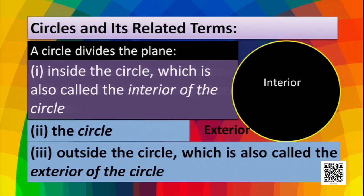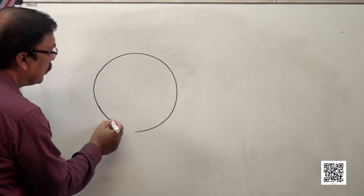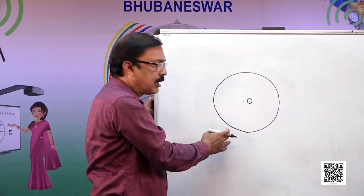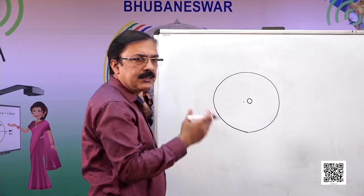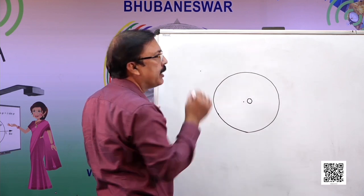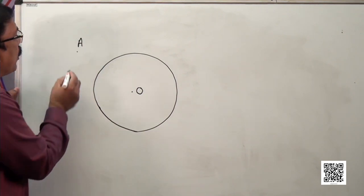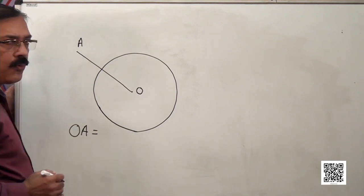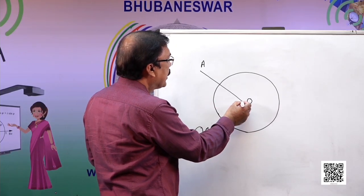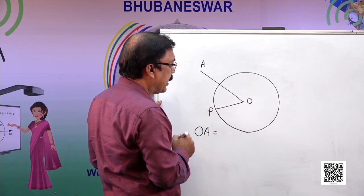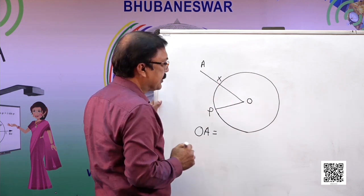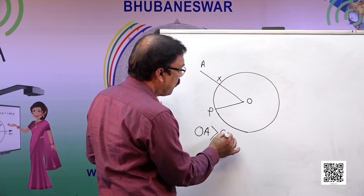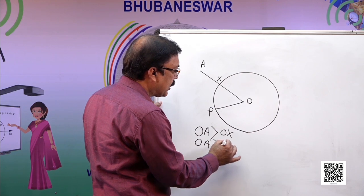Let's draw a circle. If this is a circle and O is the center, inside it is the interior and outside is the exterior. If we put a point A outside and join line OA, the length OA is greater than the radius. If OP is the radius, it intersects the circle at X, so OA is greater than OX, meaning OA is greater than radius R.